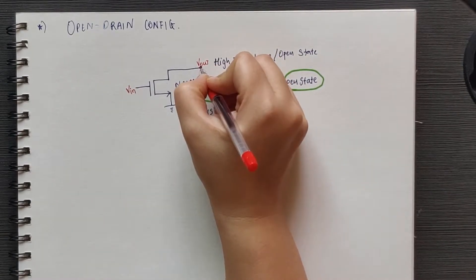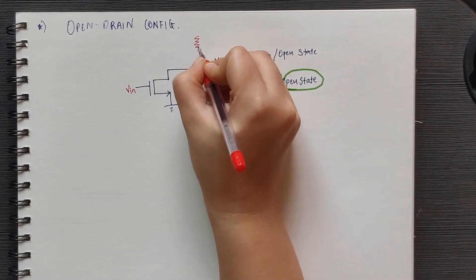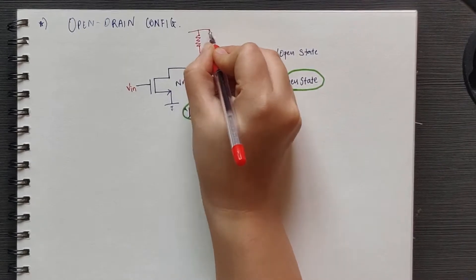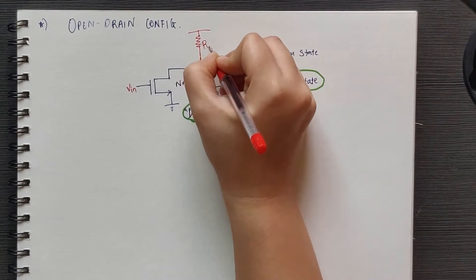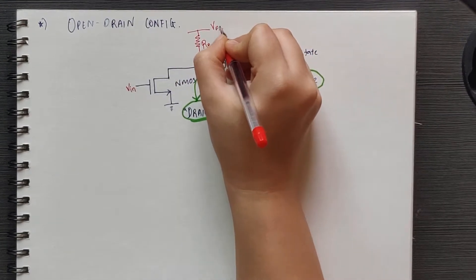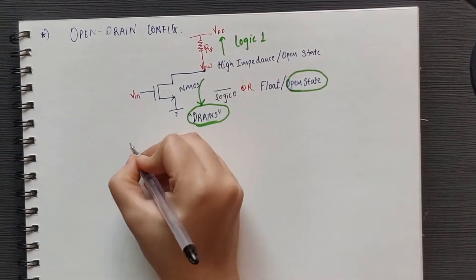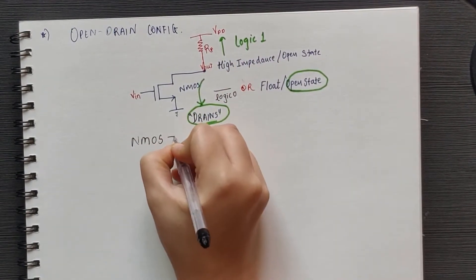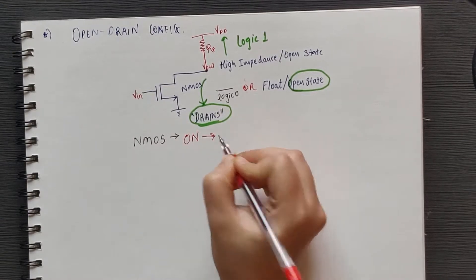Now to get logic 1, we need to add an additional component to this circuit, which is nothing but an external pull-up resistor. Now when the NMOS isn't conducting, at that time, the output is driven to VDD via the pull-up resistor.